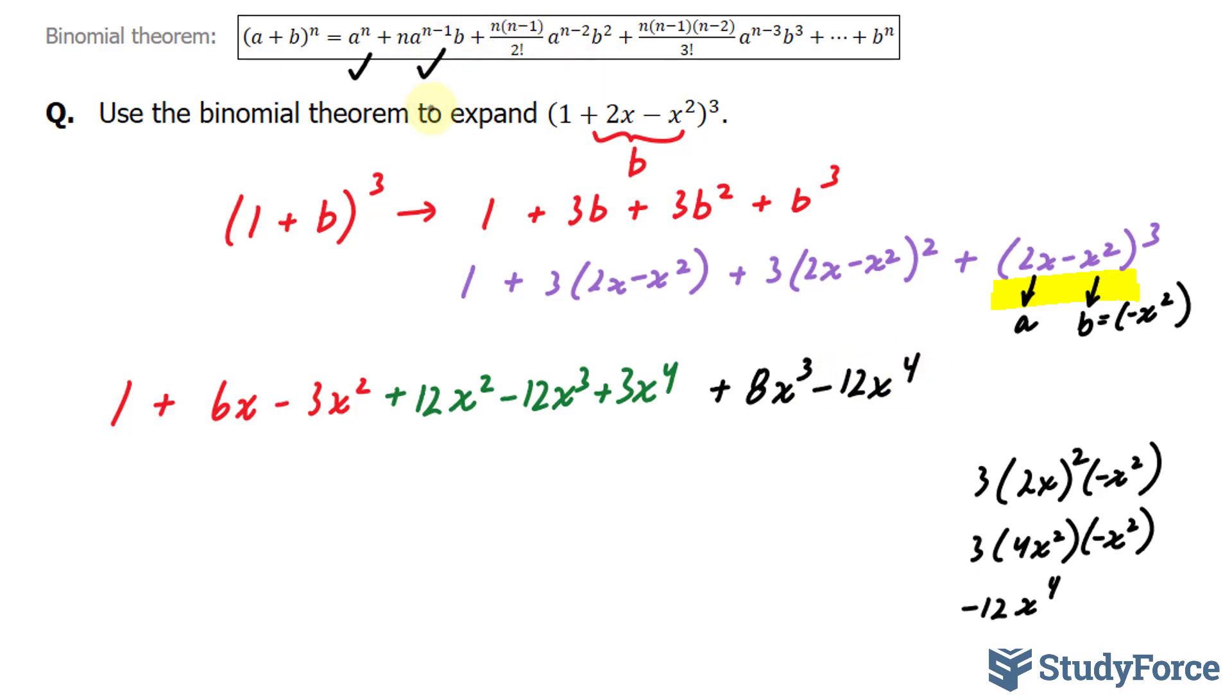Let's move on to this term. We have 3 times (3-1) over 2 factorial, which is 2.